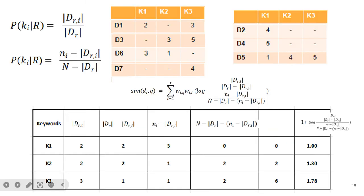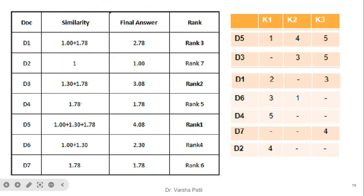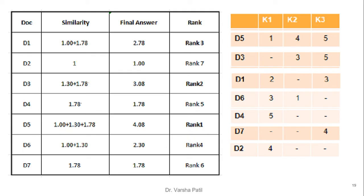After the feedback search calculation, the document containing all keywords now has the maximum similarity value and comes to rank 1. The next greatest value (3.02) comes to rank 2. Documents whose query terms most match the document terms come to the top. After feedback, the ranking becomes: D5 first, then D3, D1, D6, followed by the documents having only one keyword matching.